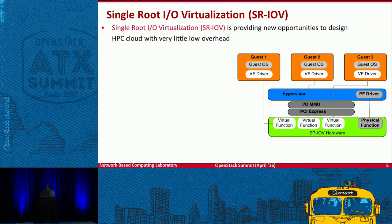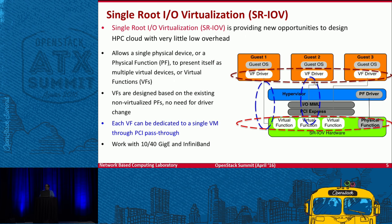Let me go into a little bit of detail on SRIOV. This technology tries to provide HPC cloud with very little overhead. Typically there are multiple guests, and the objective is that a single physical device — a physical function — presents itself as multiple virtual devices or virtual functions. Each VF can be dedicated to a single VM through PCI passthrough. This technology has been available on the Ethernet side for many years, and a few years back Mellanox also introduced it on the InfiniBand side.